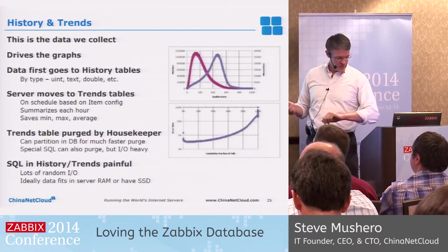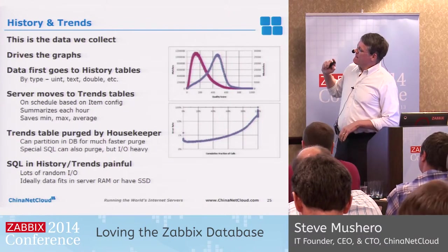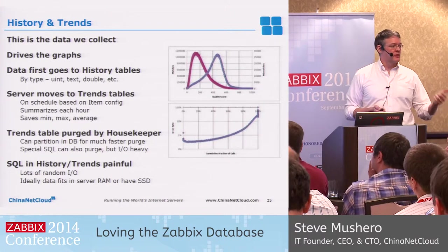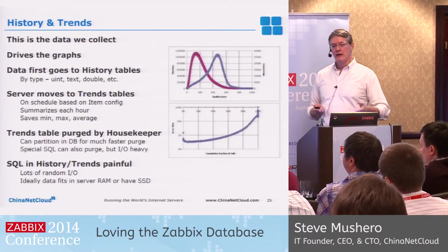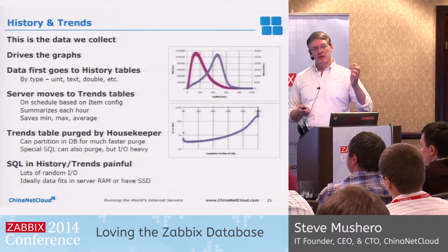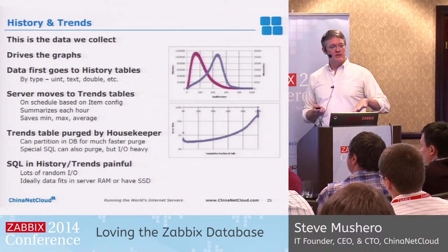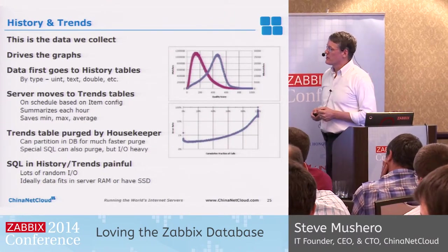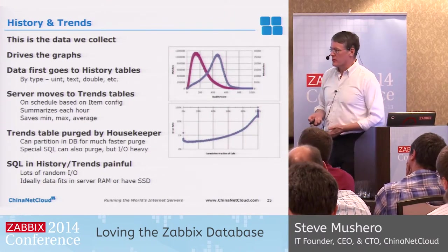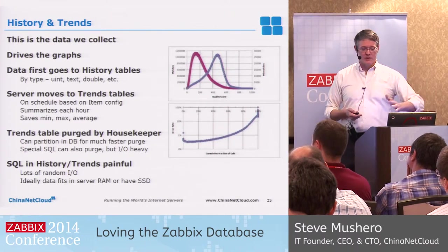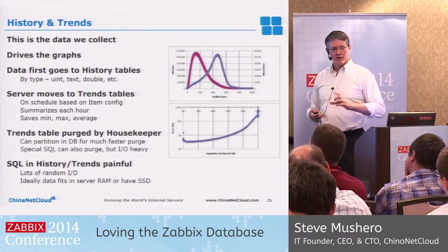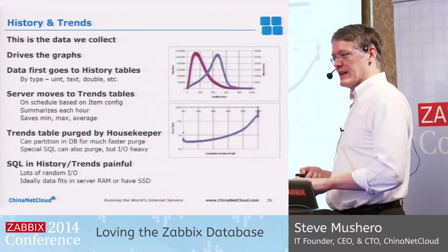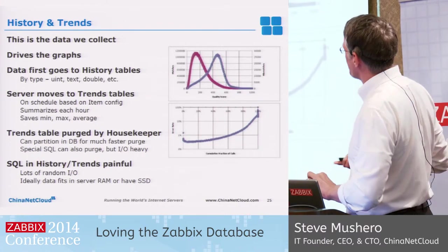History and trends: data is collected into the history tables by different types — floating point, string, and so on. At the end of the history interval, that gets converted to trends by the server. The trend table is the long-term table you can scan and analyze. This is purged by the housekeeper. I just discovered that the housekeeper only purges four times the housekeeper interval — this is a big problem because we only purge once a day, and this explains why we have too much history data.